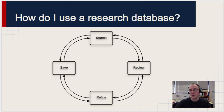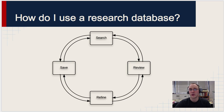So how do you use a research database? There are four steps to the process of using a database, and these steps don't go in a particular order. At any given time you may find yourself jumping to a different spot in the research process. The process is to first search, then review, refine, and save your results.